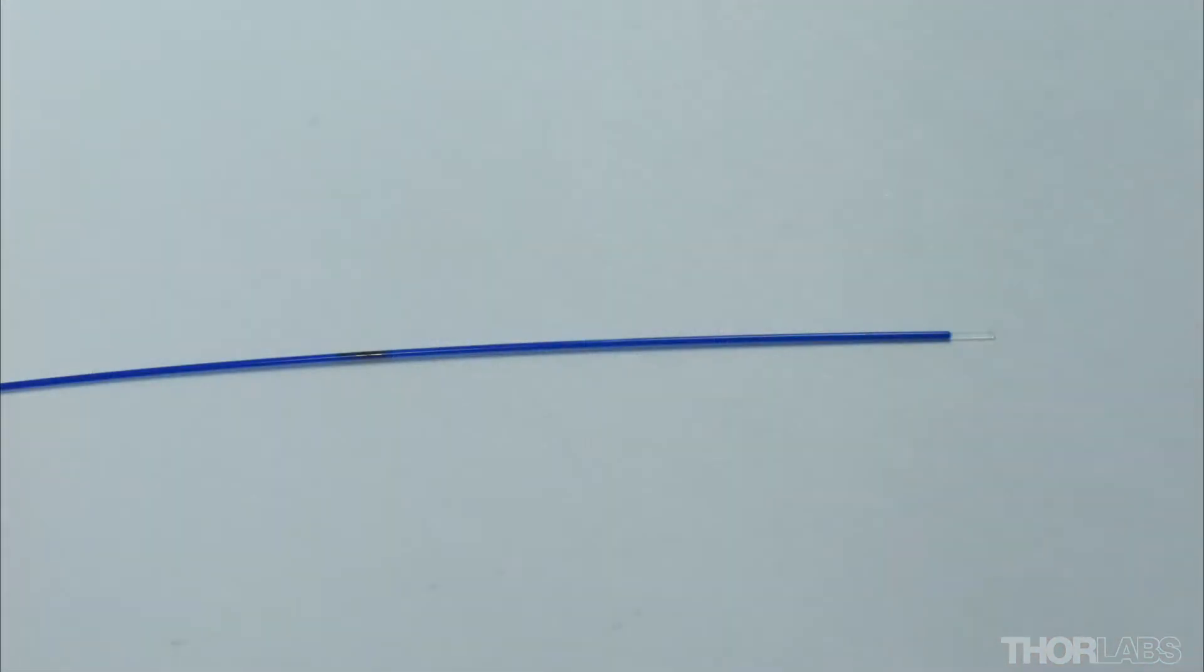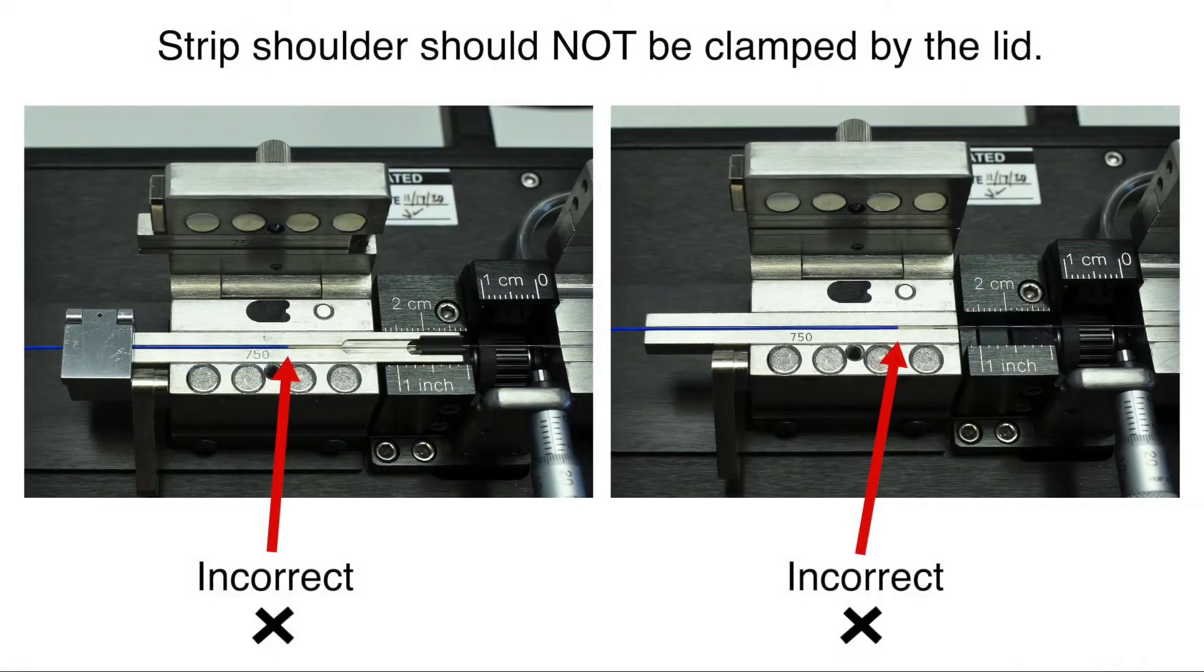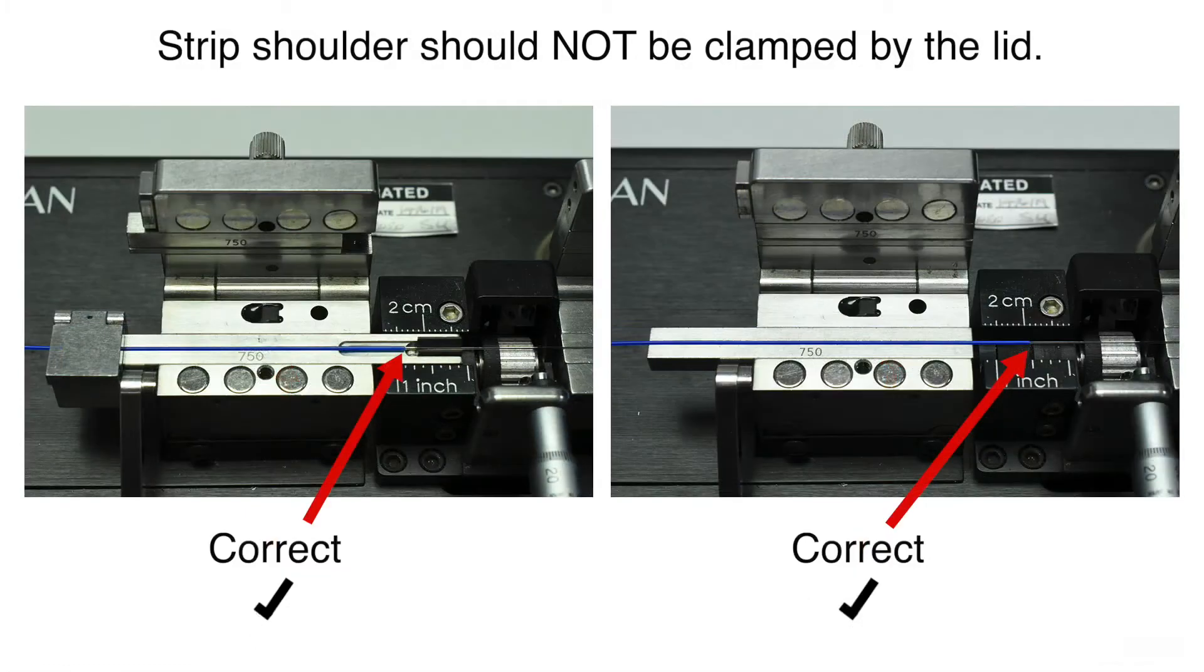To prepare the fiber for cleaving, it will need to be stripped and cleaned. It may be helpful to mark the intended strip length. To ensure good cleave angle repeatability, the strip shoulder should be positioned so that it is not clamped by the left fiber holding block lid.